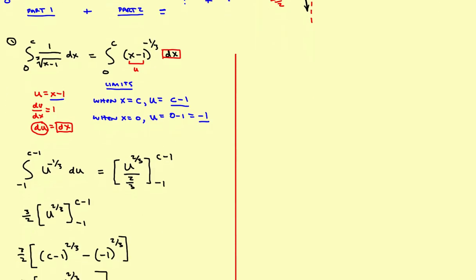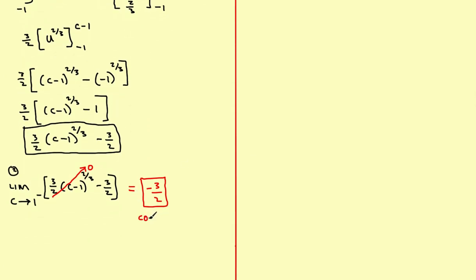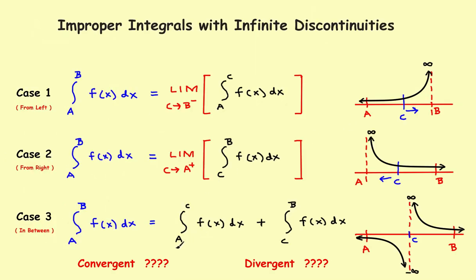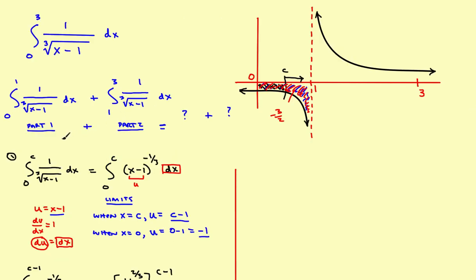This result is convergent. That's important because, going back to the rules: if either of the two integrals is divergent, you stop — the whole integral is divergent. Since the first part is convergent at negative 3/2, we can keep going and hope the second part is also convergent, then put both parts together.